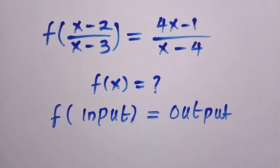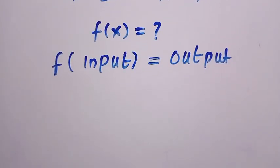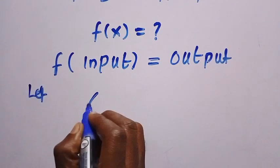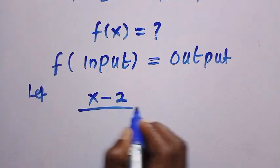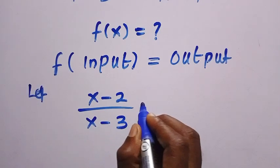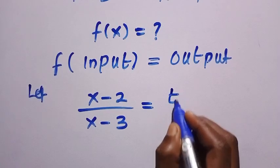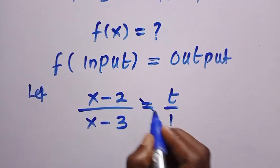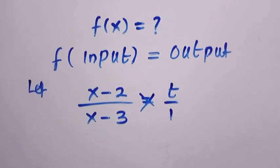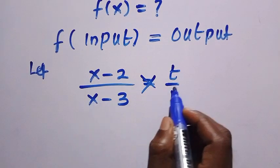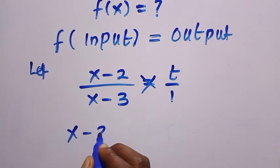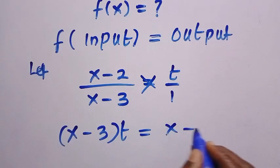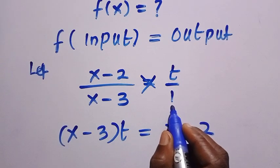To solve this, we are going to apply the substitution method. We let x minus 2 divided by x minus 3 equal t divided by 1. By cross-multiplying, we have x minus 3 multiplied by t equals x minus 2 multiplied by 1.